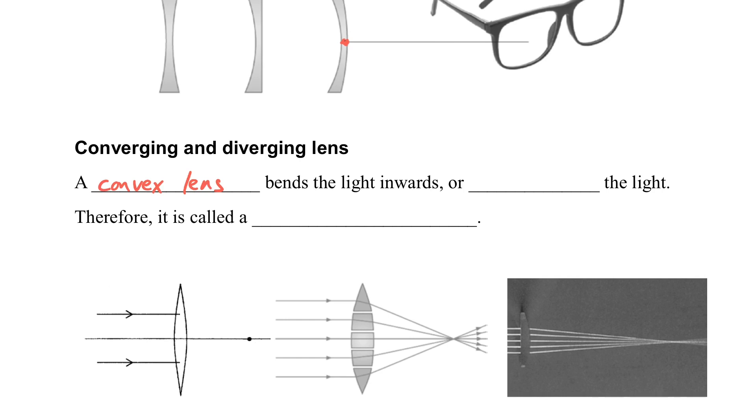So convex lens has another name. We call it converging lens because it will converge the light together. You can see that in the following figures, how the light converges after passing through the lens.